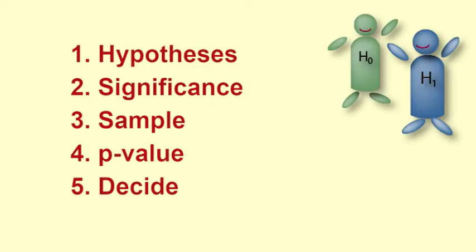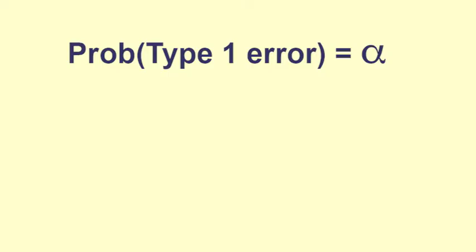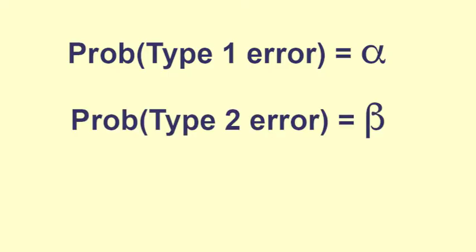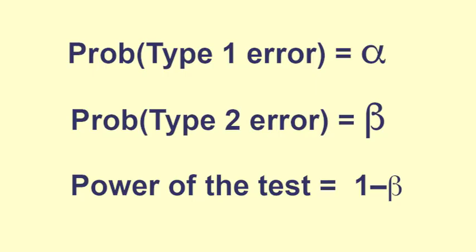In hypothesis testing, the alpha value or significance level tells us what the probability is of a Type 1 Error. The probability of committing a Type 2 Error is labelled Beta. The probability of not committing a Type 2 Error is called the power of the test and is 1 minus Beta.